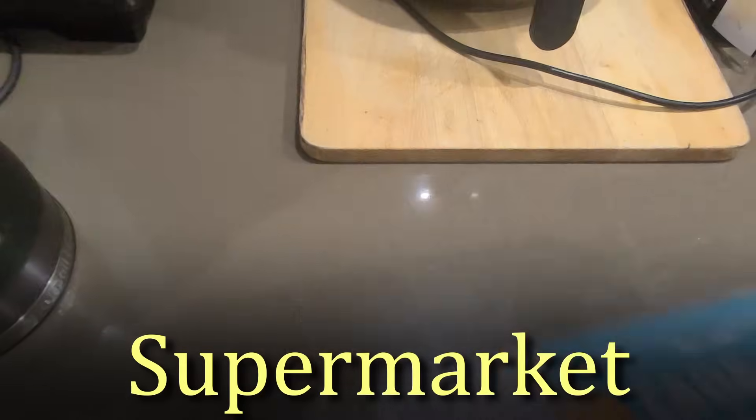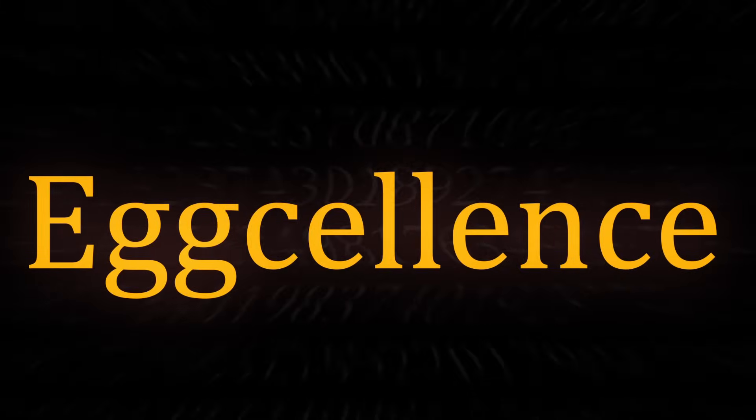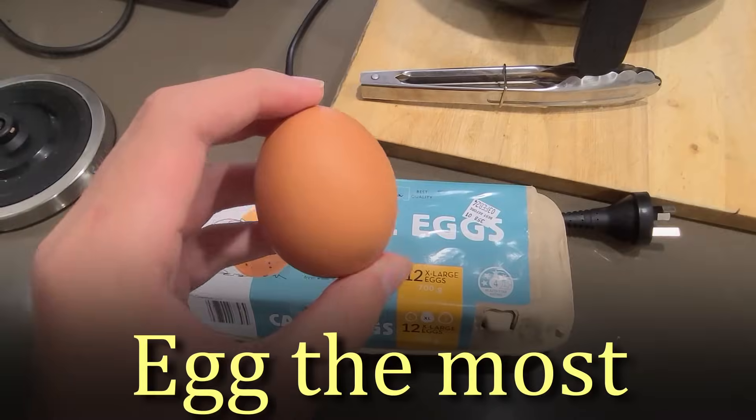Whenever we buy an egg from the supermarket, we all want one thing, to graph it on the XY plane. But in order to achieve our goals of excellence, we have to start off basic with the geometric shape that resembles an egg the most, a circle.